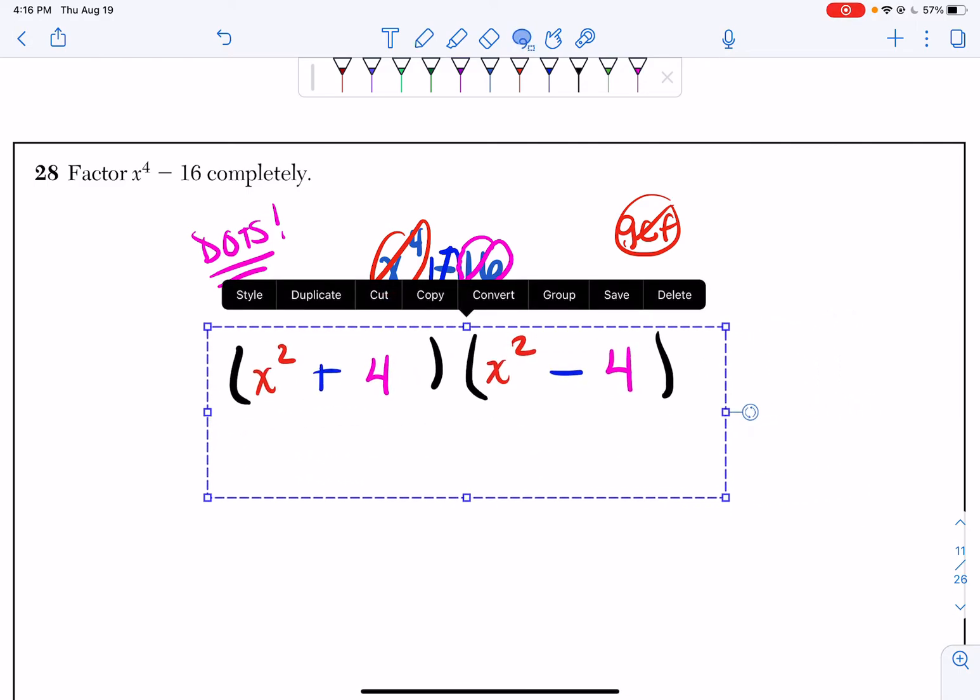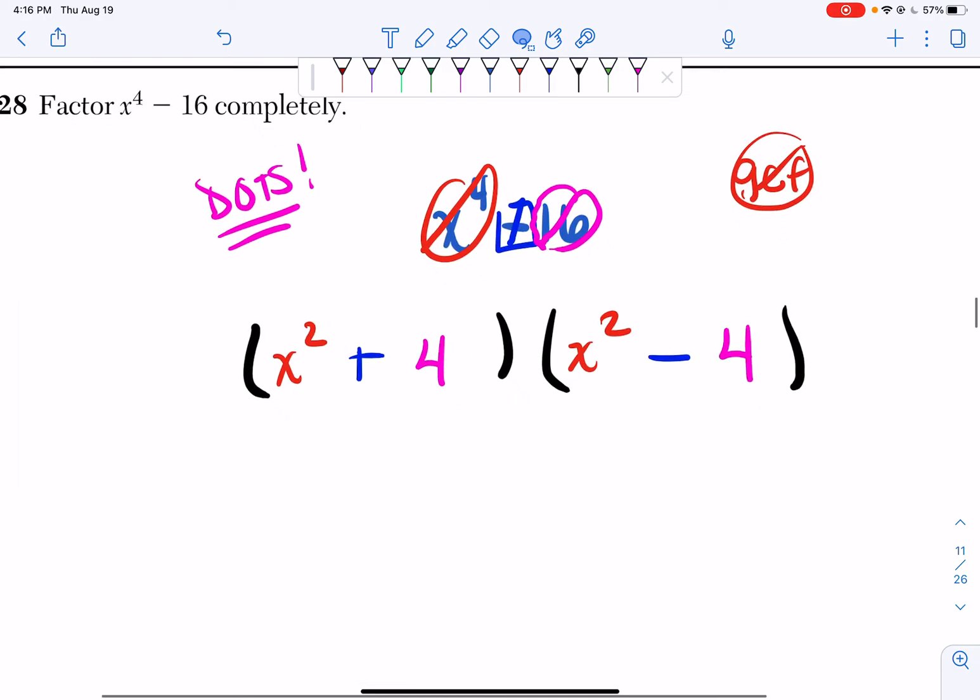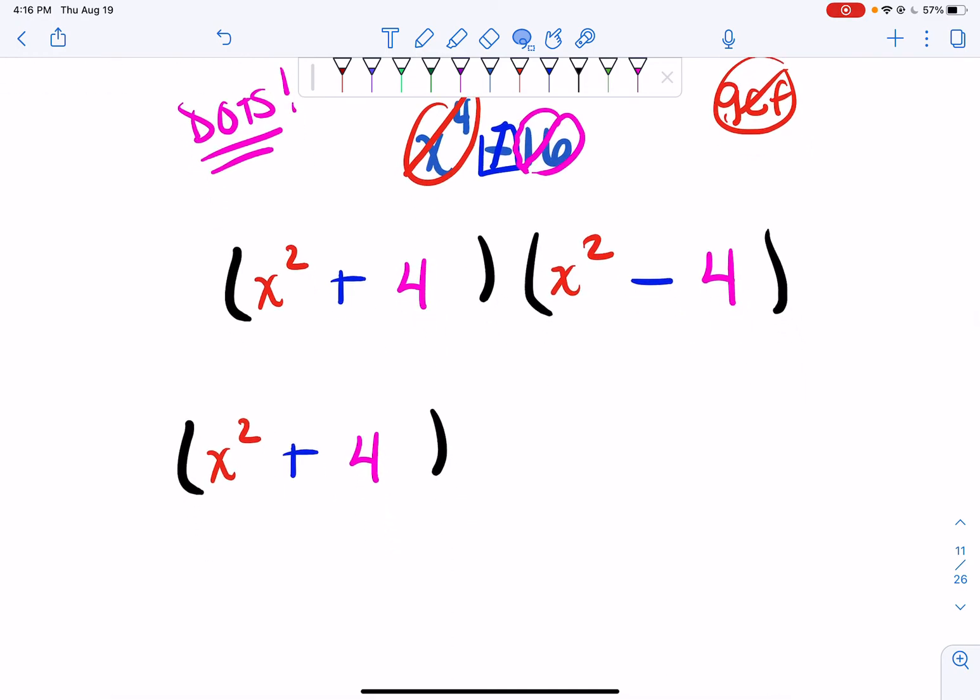Now if you look right here, you might think you're done. I know I can't factor x squared plus 4, but I can actually keep on going. I can factor x squared minus 4. So I'm going to rewrite this, and I have my x squared plus 4. But now I need to factor x squared minus 4.